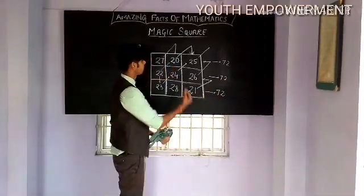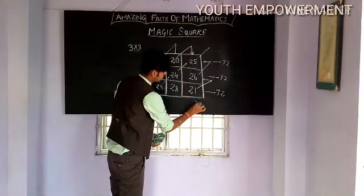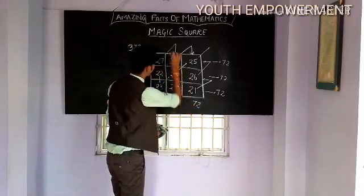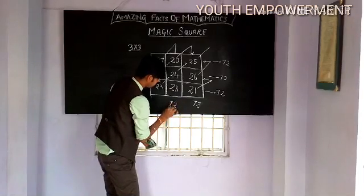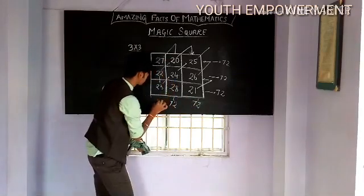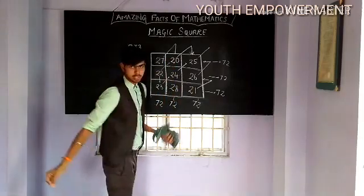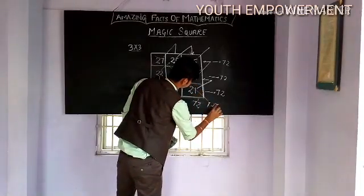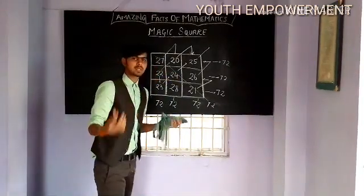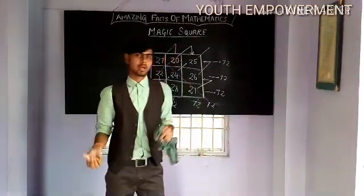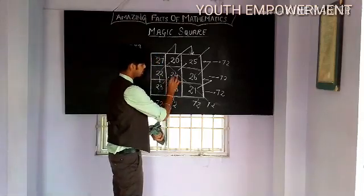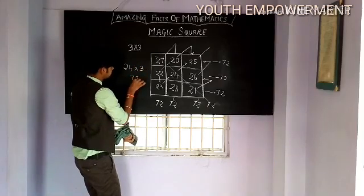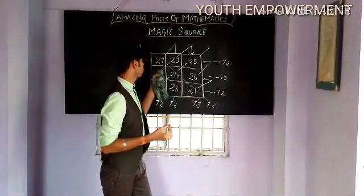That's the magic square, my friends. When you add this column, you will get 72. When you add this column, you will get 72. When you add this column, you will get 72. When you add this diagonal, you will get 72. That is the speciality of the magic square. In order to find the total, the simple method is 24 into 3, which gives 72 — that is how you get the sum total of 3 boxes.